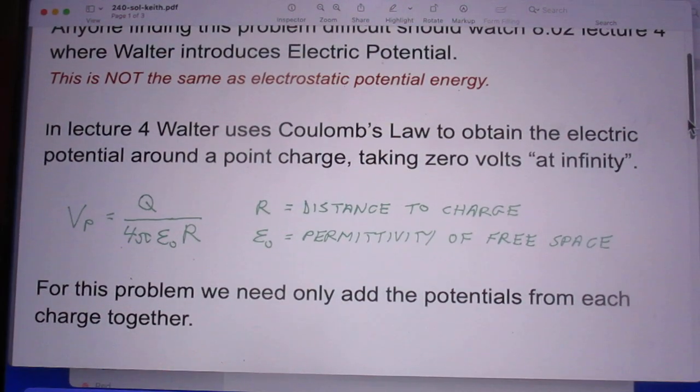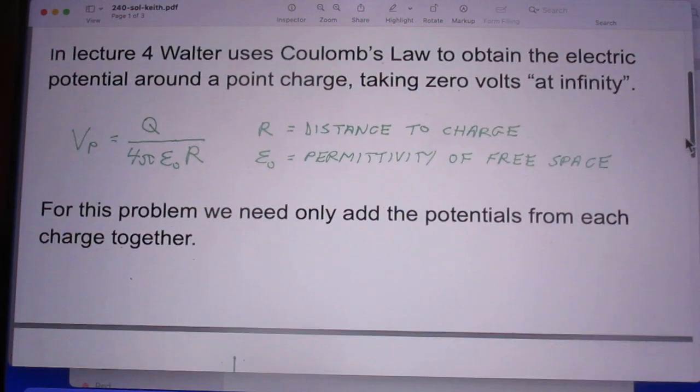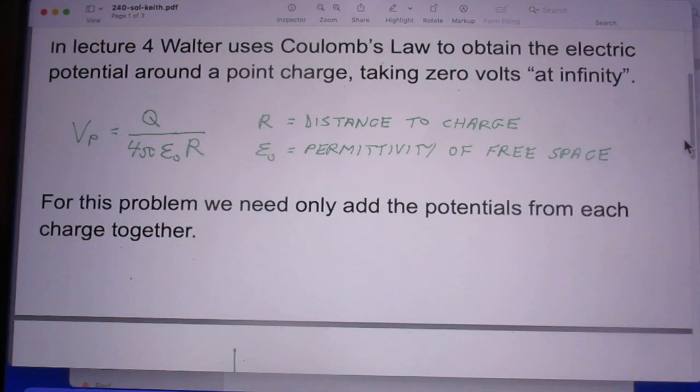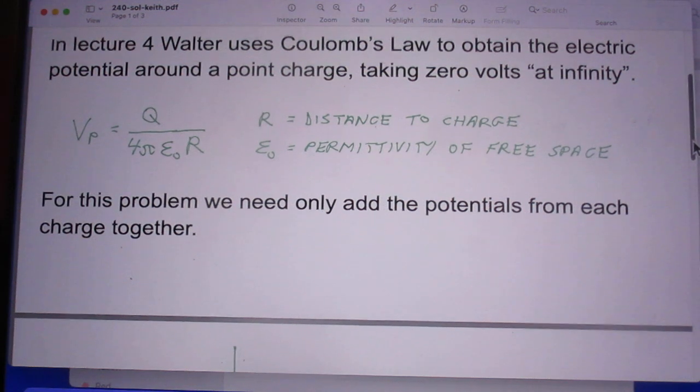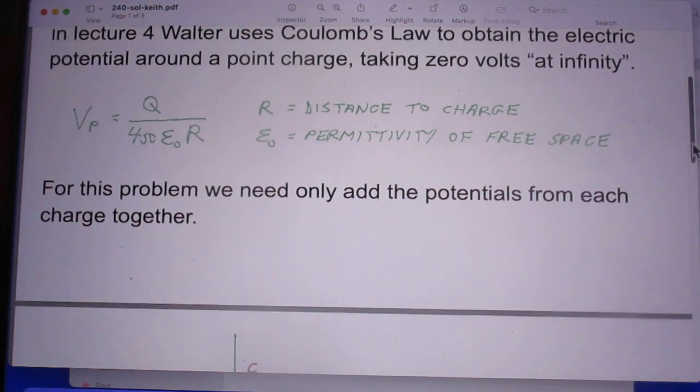They have different dimensions, by the way. In lecture 4, Walter uses Coulomb's law to obtain the electric potential around a point charge, taking zero volts at infinity. That's the only meaningful thing to do.